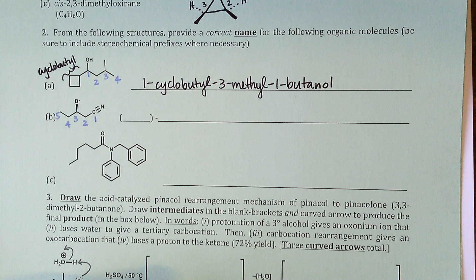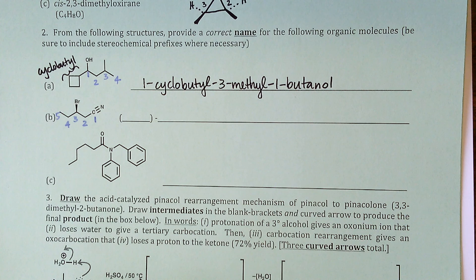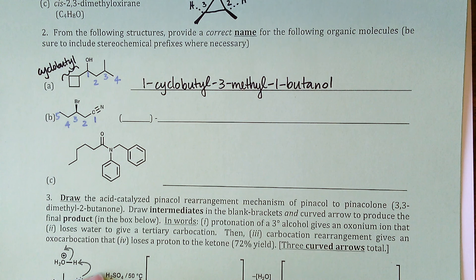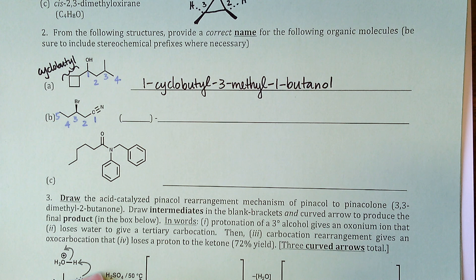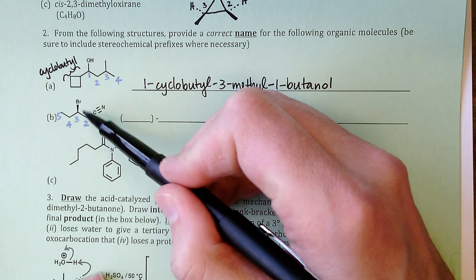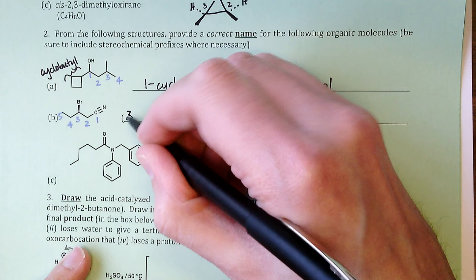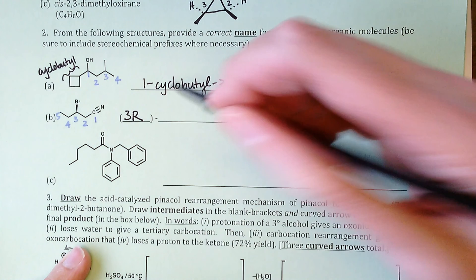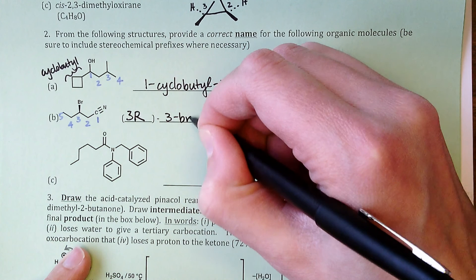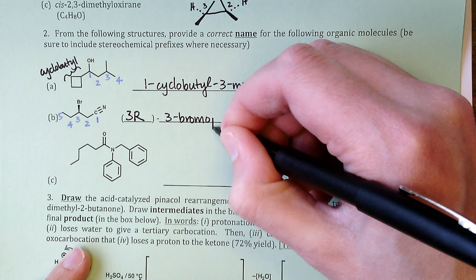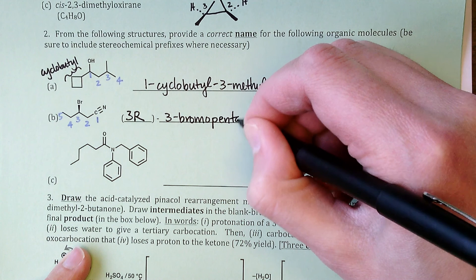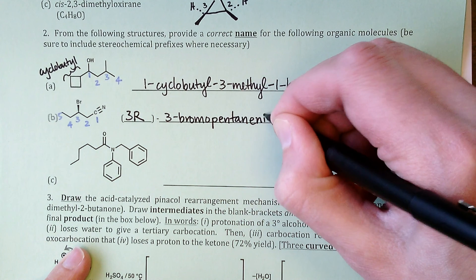The most common mistake on part b is to name the carbon-nitrogen triple bond as a cyano group, but this is the group of highest priority. The carbon of the nitrile is part of the cyano group itself, so this is pentanenitrile, and carbon three has a bromine atom with the R configuration — giving 3-bromopentanenitrile.